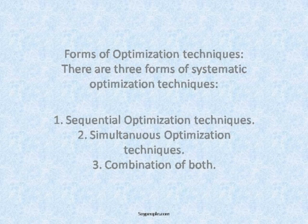Forms of optimization techniques. There are three forms of systematic optimization techniques: 1. Sequential optimization techniques, 2. Simultaneous optimization techniques, and 3. Combination of both.